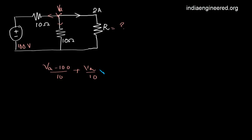That is, we have VA minus 100 plus VA plus 20 equals 0. So 2VA equals 100 minus 20, which is 80. Therefore VA equals 40 volts.